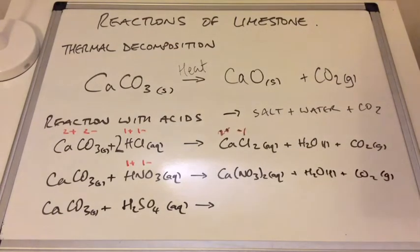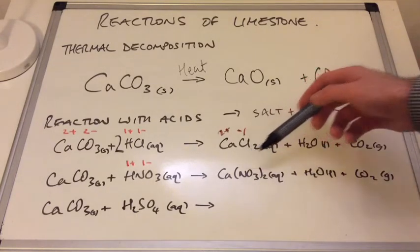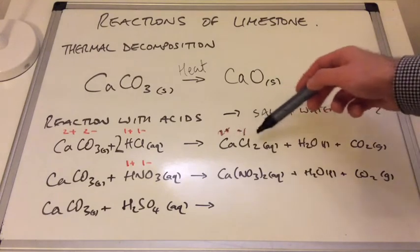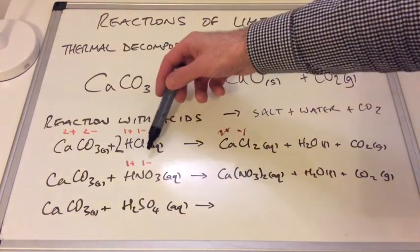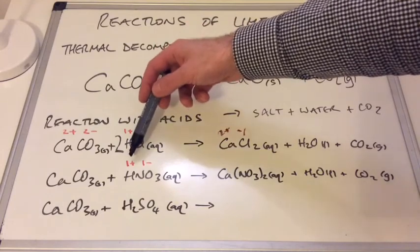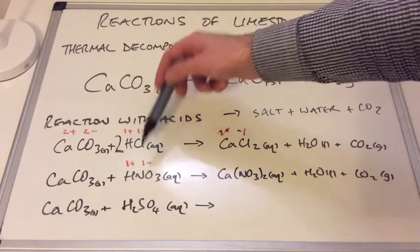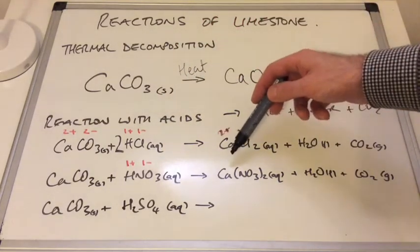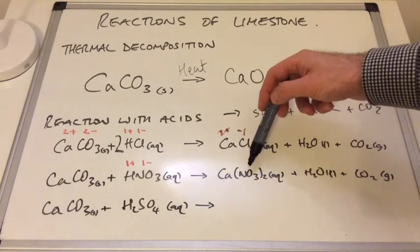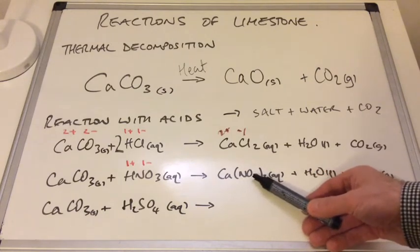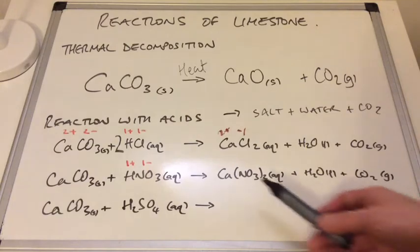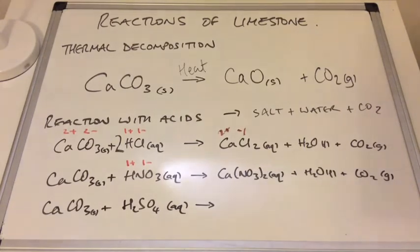For the second equation with nitric acid: the salt produced is calcium nitrate. The H⁺ is 1+ and the nitrate ion NO₃⁻ is 1−. Combining a 2+ calcium with 1− nitrate ions, we need two nitrate ions. Because nitrate is made from more than one atom, we wrap it in a bracket: Ca(NO₃)₂. A 2 in front of the nitric acid balances the equation.